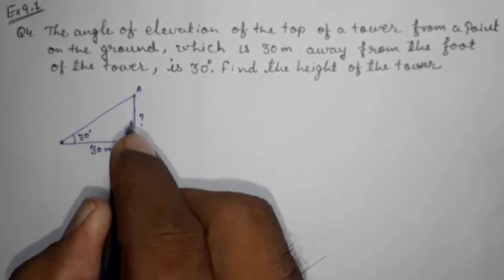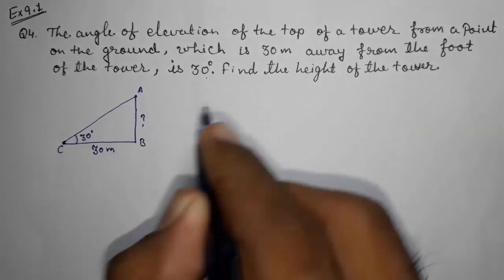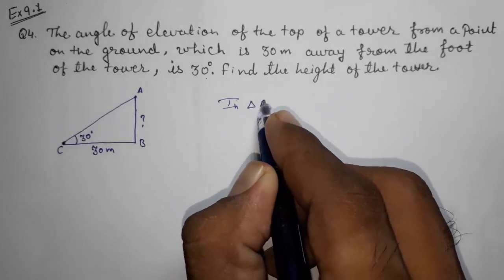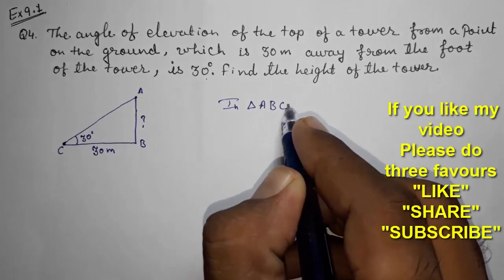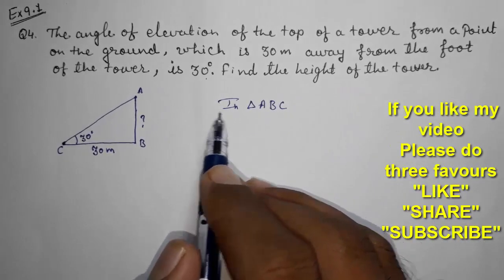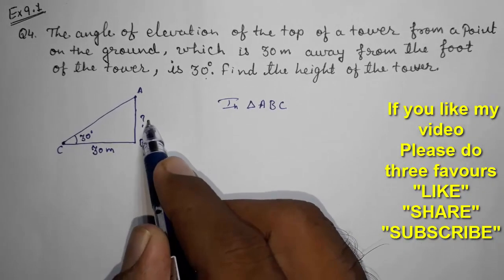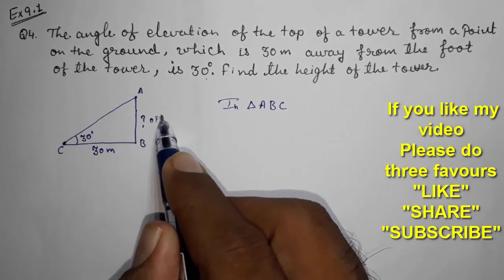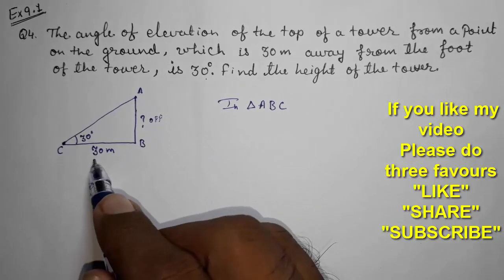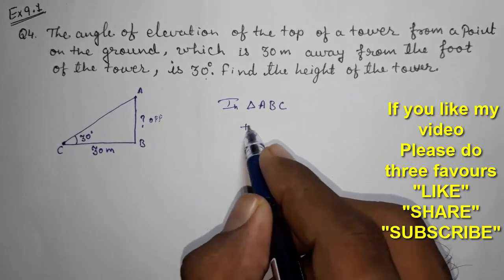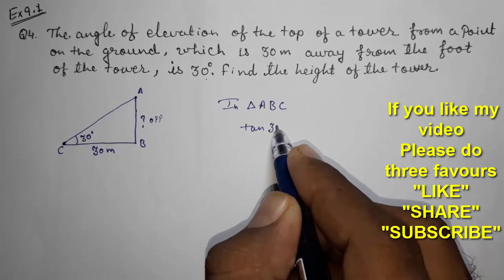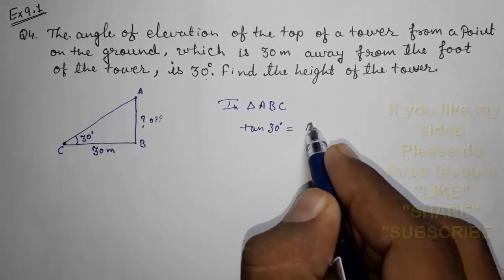So in triangle ABC, now what we want to find out: they had given us this, this is adjacent, and they told us to find out this, this is opposite. So opposite by adjacent, so what we are going to use is tan 30 degrees, that is opposite by adjacent.